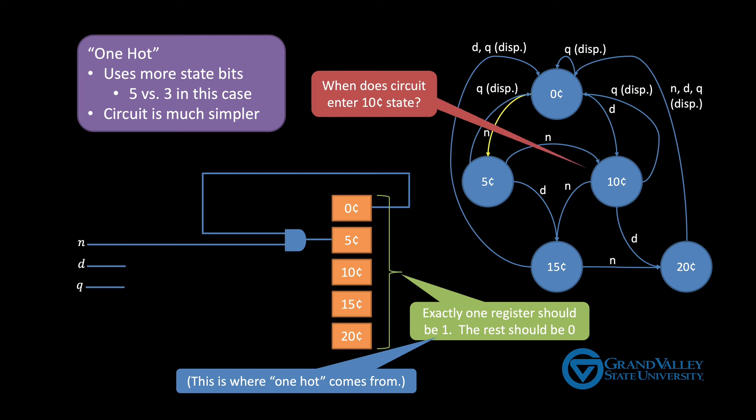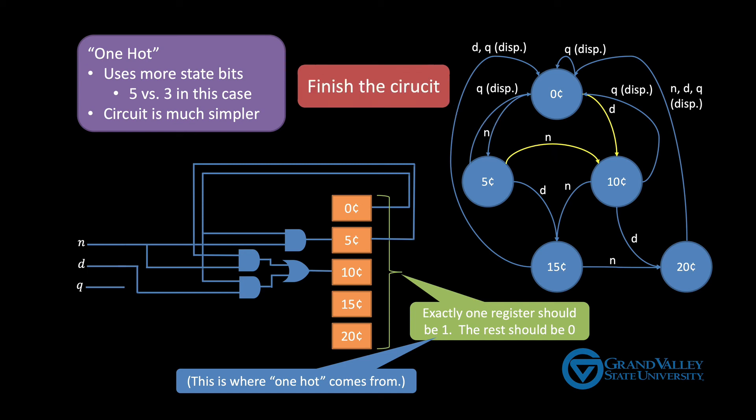So now when will the circuit enter the 10 cent state? Well, this time there are two arcs into the 10 cent state. So we enter this state when either we start in the five cent state and the user inserts a nickel or we start in the zero cent state and the user inserts a dime. So pause the video and see if you can follow this pattern and finish this circuit.